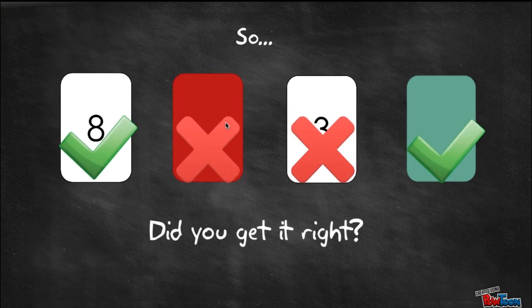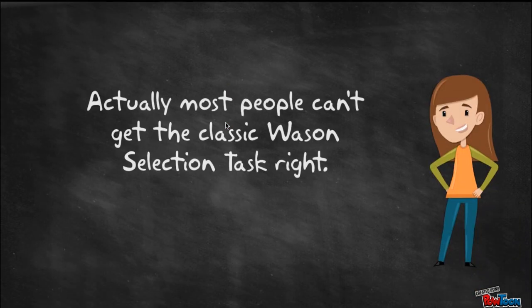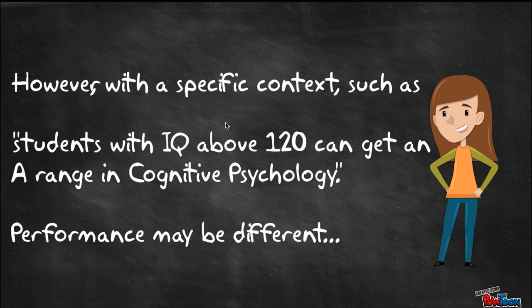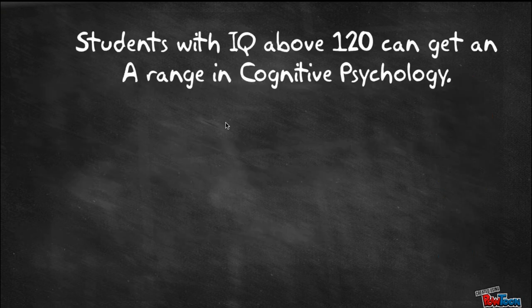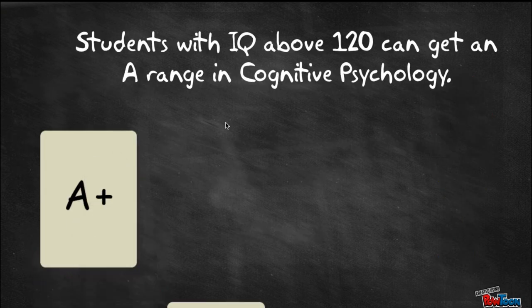So did you get it right? Actually, most people cannot get the classic Wason selection task right. However, with a specific context, say students with an IQ above 120 can get an A-plus in cognitive psychology course, the performance might be different.